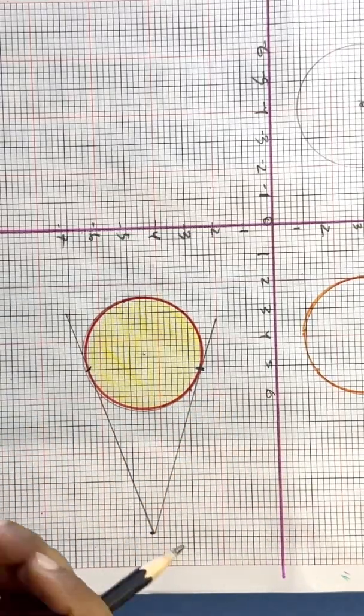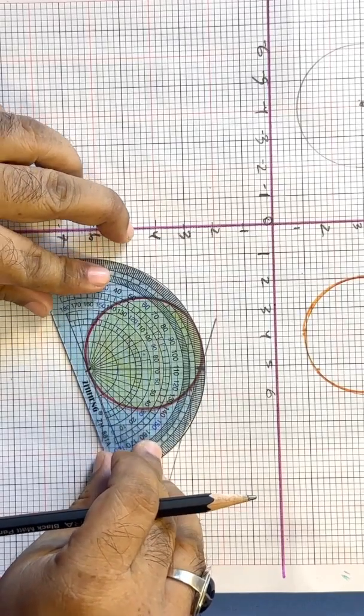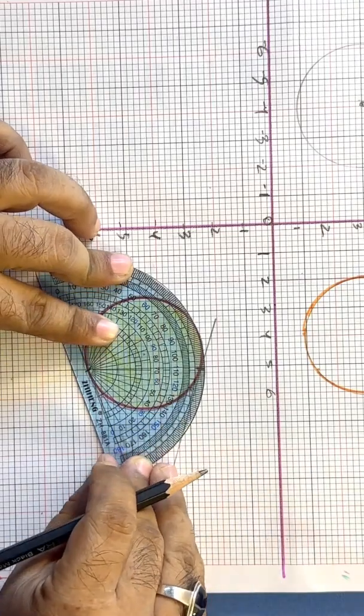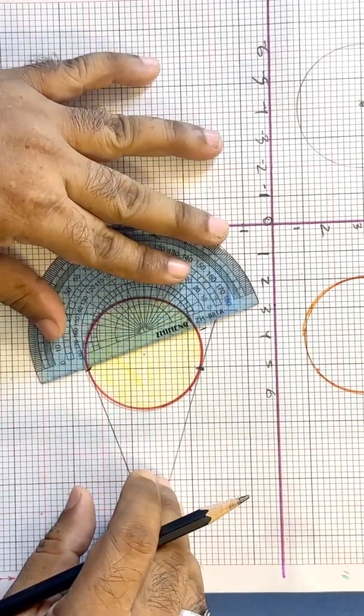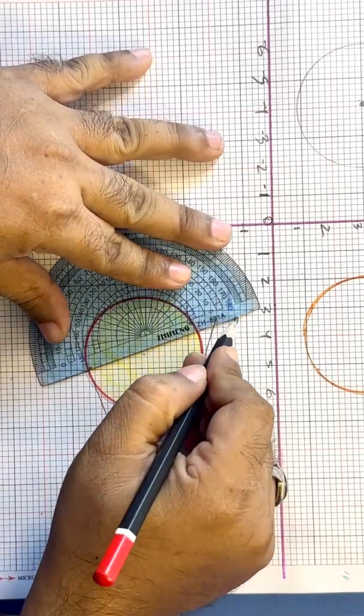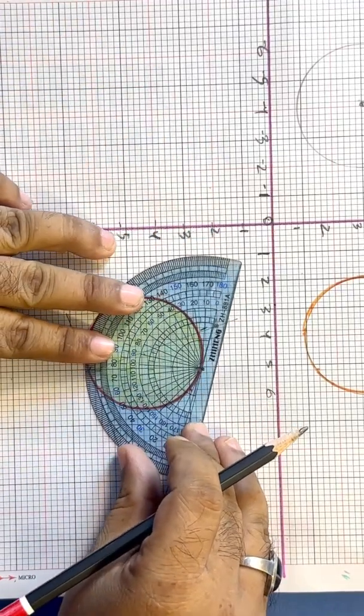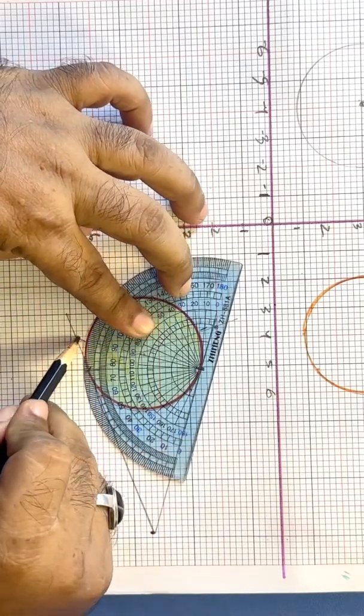Take a protractor and make a 90-degree angle over here on this point. Is that correct? Oh yes, it is correct. It is 90 degrees. Draw this line and another 90-degree line over this point. Here is a 90-degree angle.